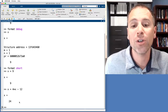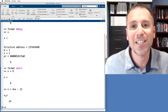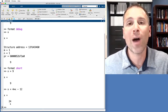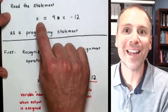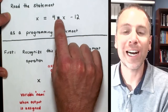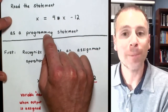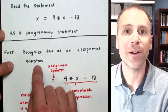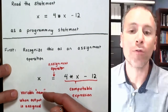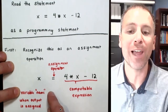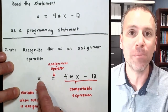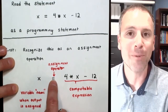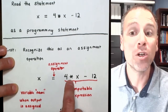When I push enter on this, you're going to see a result that is non-intuitive if you have your mathematician's glasses on. Notice that x is going to be equal to 24. Let's analyze why by thinking about each variable as having those three attributes. When MATLAB reads the command 'x becomes 4 times x minus 12' as a programming statement, the first thing it does is recognize the equal sign as an assignment operator. On the left-hand side is the symbolic name x, then the assignment operator, and on the right-hand side a computable expression.